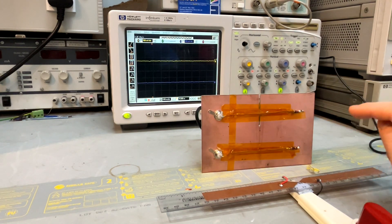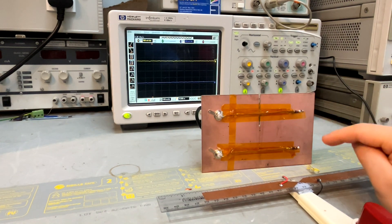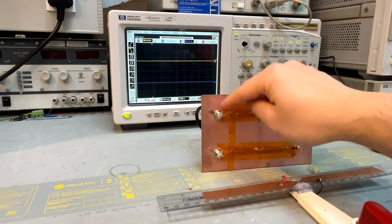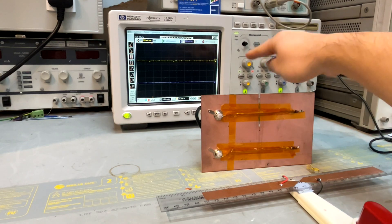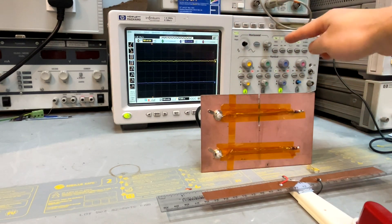For this demonstration, I'm going to demonstrate the immunity performance between the two configurations. Therefore, the BNC connectors are actually connected to the 50 ohm impedance of channel 1 and channel 3 of this oscilloscope.